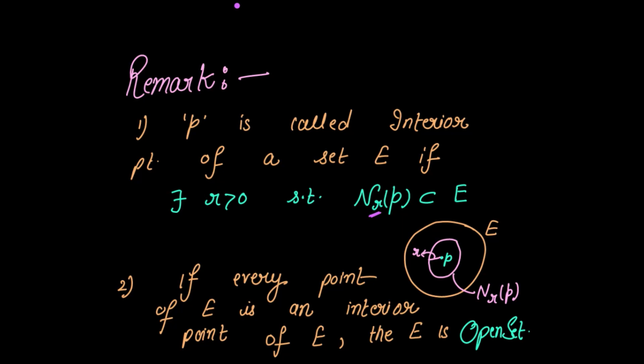The first remark: p is called an interior point of a set E if there exists r positive such that the neighborhood of p with radius r is a subset of E. So suppose this is your set E and a point p belongs to E. If there exists r positive such that the neighborhood of p belongs to E, then we say that p is the interior point of E.